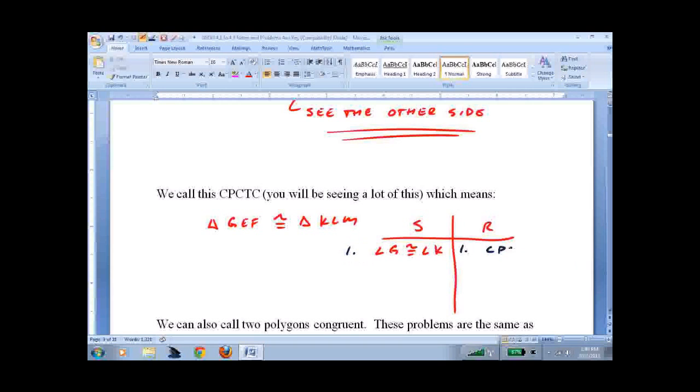We would write CPCTC. That's right here. You'll see why we abbreviate it. The corresponding parts of congruent triangles are congruent.